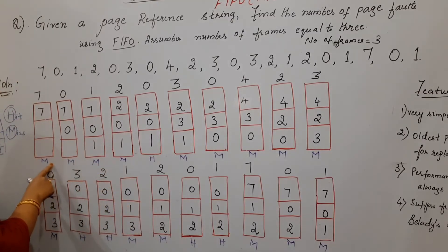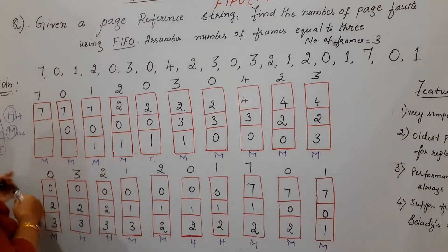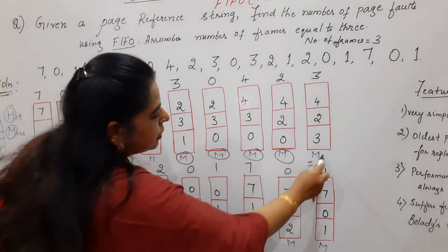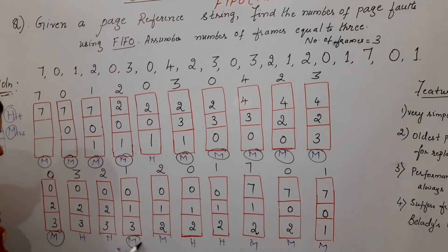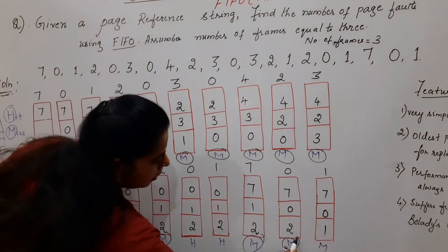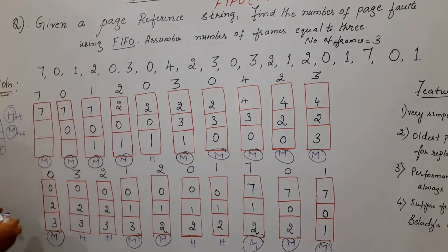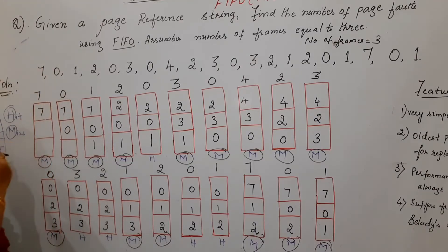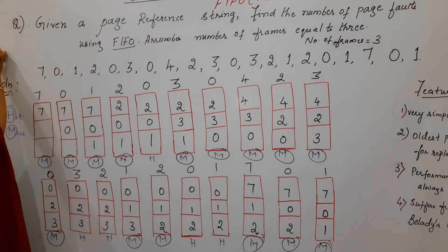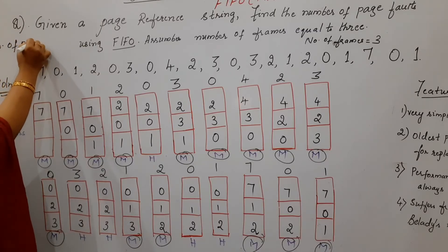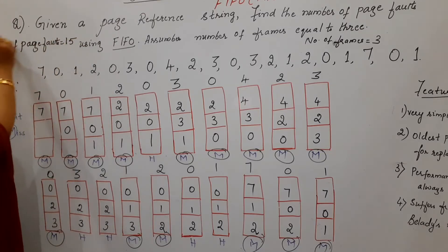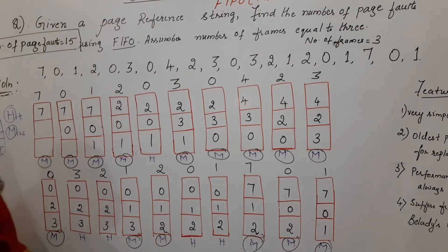Once you complete all pages, find out the number of times M is appearing. Counting: 1, 2, 3, 4, 5, 6, 7, 8, 9, 10, 11, 12, 13, 14, 15. The letter M appears 15 times, so the number of page faults equals 15.